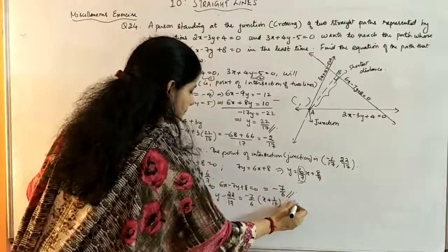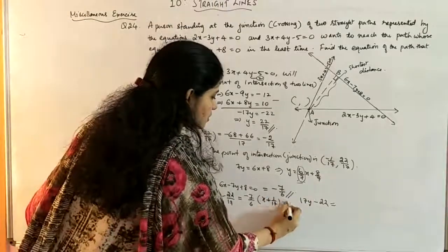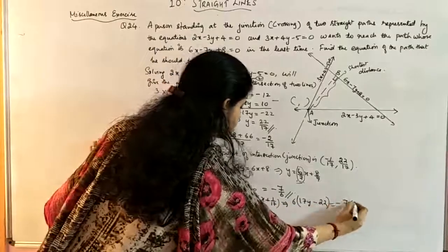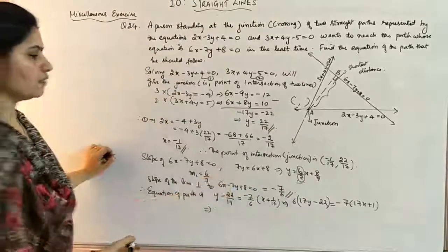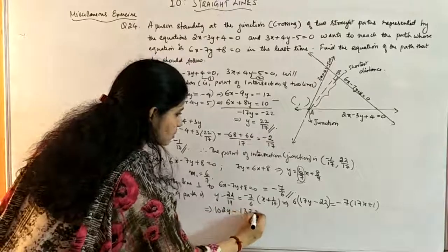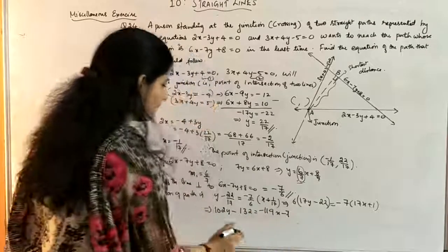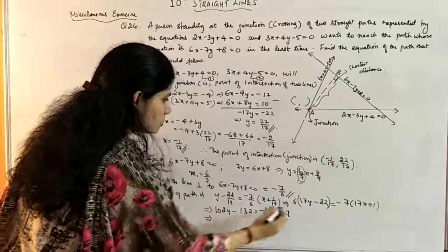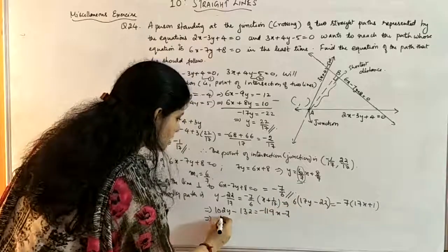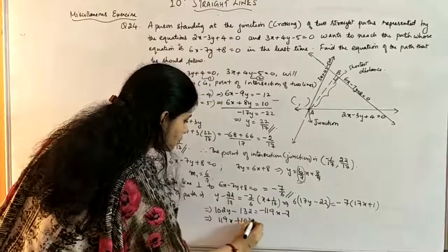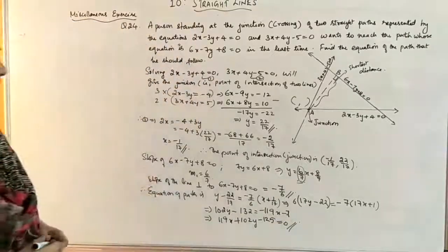Simplifying: multiply through by 6·17 = 102, giving 6(17y - 22) = -7(17x + 1), so 102y - 132 = -119x - 7. Rearranging: 119x + 102y - 125 = 0. This is the equation of the path the person should follow, in the form ax + by + c = 0.